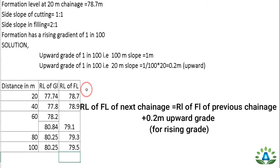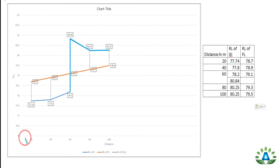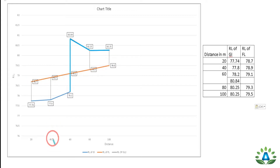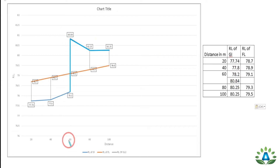A graph has been drawn with distance on the x-axis at 20-meter intervals and RL (reduced level) on the y-axis. The formation level starts at 78.7 meters at the 20-meter chainage and increases by 0.2 meters at each interval — 78.9 at 40 meters, and so on. The ground level is also plotted, and at the 60-meter chainage, there are two ground levels at the same chainage.